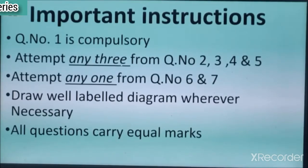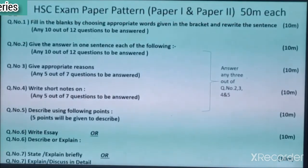Now I am discussing the paper pattern, paper first and paper second. Question number 1: fill in the blanks by choosing appropriate words given in the bracket and rewrite the sentence. This consists of 10 marks. You have to answer any 10 out of 12 questions to be answered. Question number 1 is compulsory, 1 mark each for 1 option, means 1 sub-question.